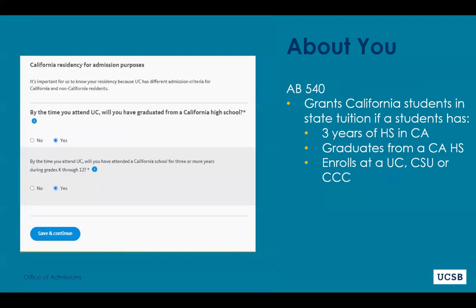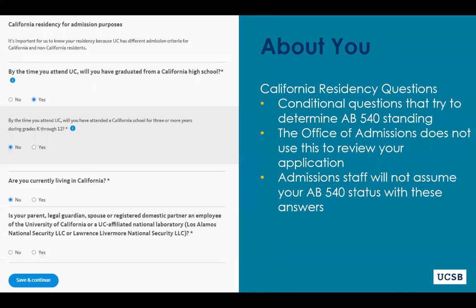For students who reside in California, Assembly Bill 540, also known as AB 540, grants in-state tuition for qualified students. In the UC application, we ask identifying questions so that we know whether or not you might be eligible for AB 540. These questions include: will you graduate from a California high school (for freshmen), or have you graduated from a California high school (for transfer students)? We then ask if you have three or more years at a K–12 school in California.